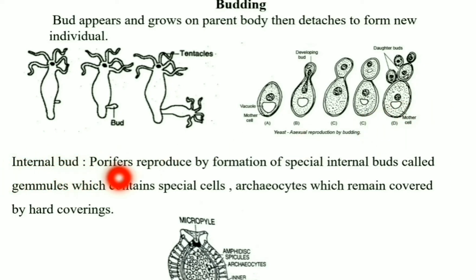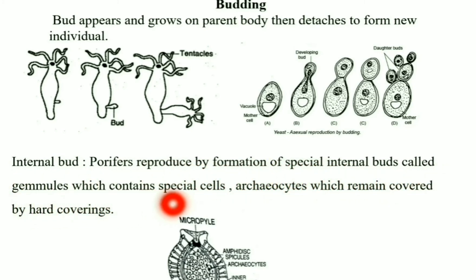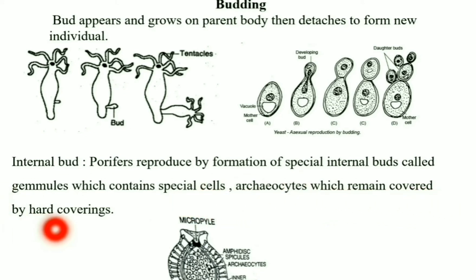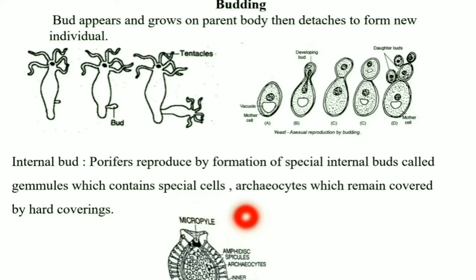Internal budding: Porifera produce special internal buds called gemmules, which contain special cells called archaeocytes, which remain covered by hard coverings. During unfavorable periods, these gemmules are released and germinate into adult sponges.